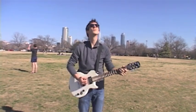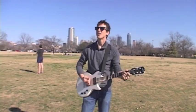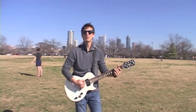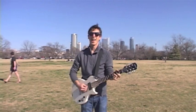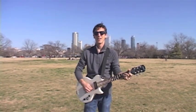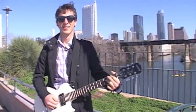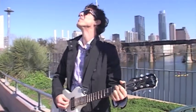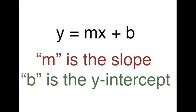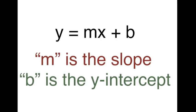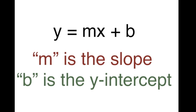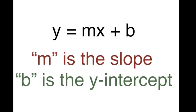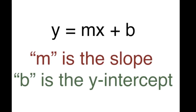Oh, sometimes graph a linear equation, yeah. y equals mx plus b — m is the slope, b is the y-intercept. Oh yeah, graph a linear equation, yeah.